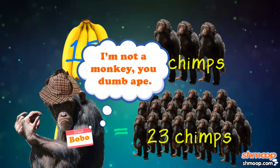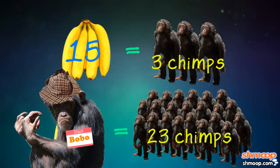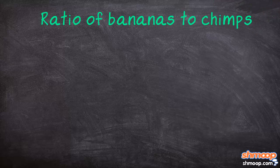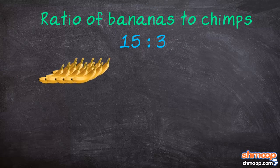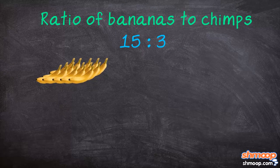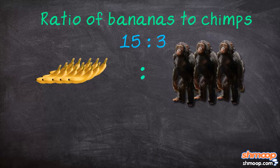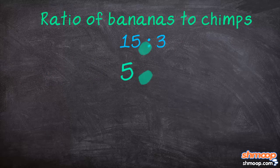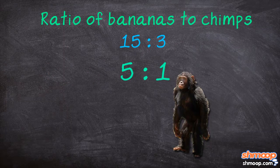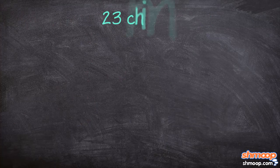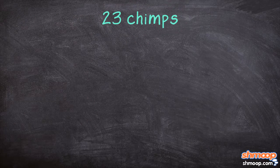Okay, so chimps aren't monkeys — you got us. Hope you're proud of yourself. Well, the ratio of bananas to chimps is 15 to 3, since Bobo put out 15 bananas to feed three chimps. It simplifies to 5 to 1, meaning one chimp eats five bananas. Now that there are 23 chimps,